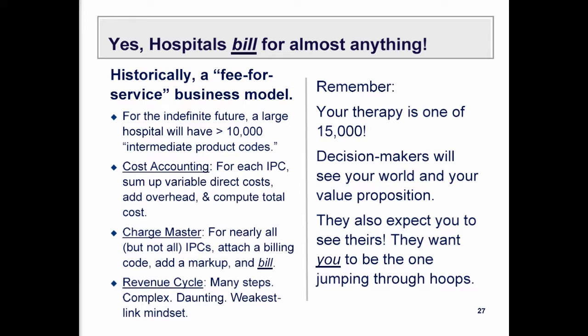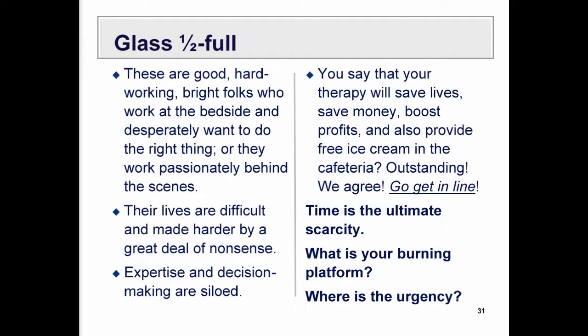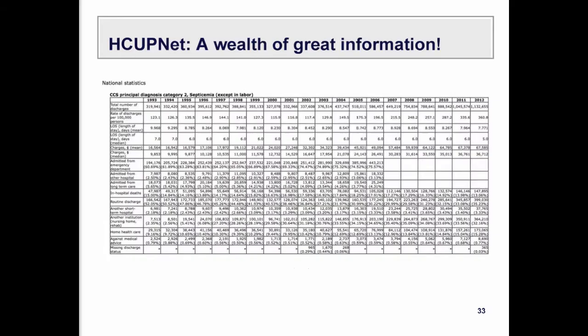The mind share your therapy gets from the University of Michigan is one fifteen-thousandth of the total. To get your therapy approved, it needs a code, a diagnosis that justifies it, entry into the cost accounting system, an intermediate product code, overhead allocation, and introduction into the charge master so it can be billed. Then there's a whole series of revenue cycle events before you actually get reimbursed. There are a lot of hoops to jump through even when the value proposition is very clear.